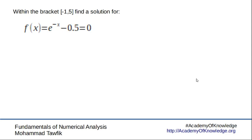Let's assume we need to find a root for this function: f(x) = e^(-x) - 0.5. This is a nonlinear equation that has a root between -1 and 5. This is a very large bracket when talking about such a function, but let's just take it as is and start working with it.